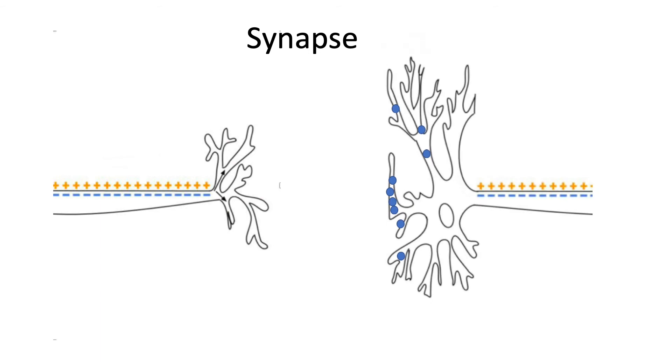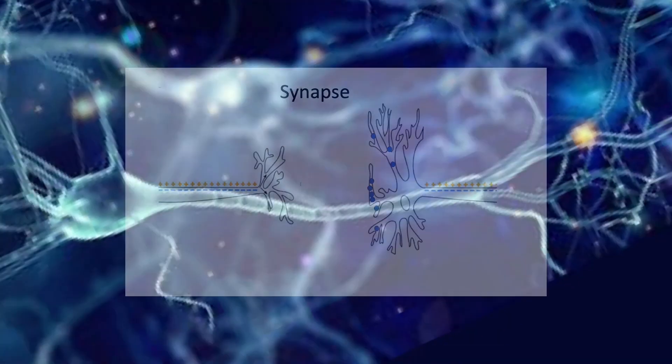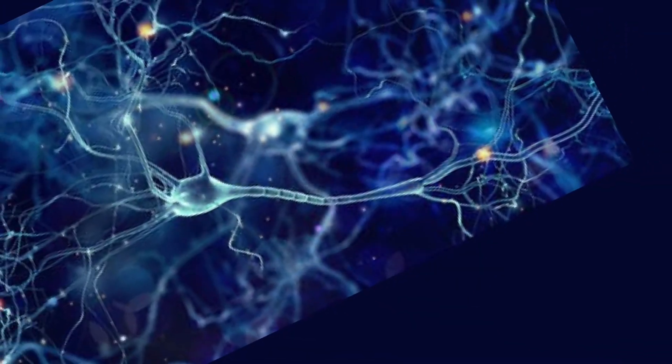Dendrites in the neighboring cell receive the neurotransmitters. Then, if conditions are right, the neighboring cell will fire, passing information on through the network. Synapses work on an all-or-nothing basis—they either fire or they don't. The strength of a signal, like the strength of pain, depends on how many neurons fire together.